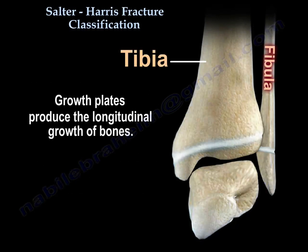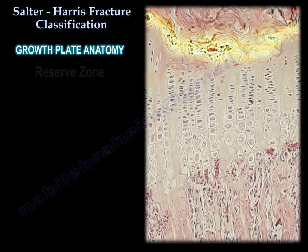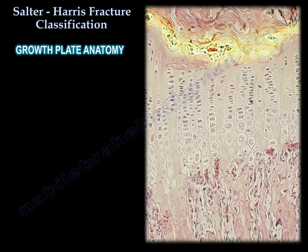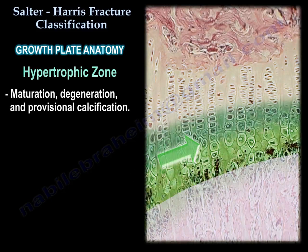Growth plates produce the longitudinal growth of bones, and are divided into zones. The first zone is called the reserve zone, and it is an inactive zone. The second zone is called the proliferating zone, where cellular proliferation and longitudinal growth occurs — this is the zone that makes us taller or shorter. The next zone is the zone of hypertrophy, divided into three sections: maturation, degeneration, and provisional calcification.